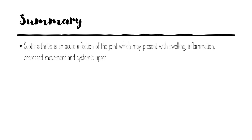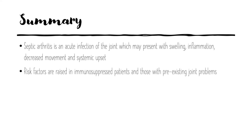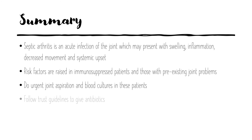Here's a summary on septic arthritis. It is an acute infection of the joint which may present with swelling, inflammation, decreased movement, and systemic upset. Patients at risk are those who are immunosuppressed or have pre-existing joint problems. You should do an urgent joint aspiration and blood cultures in these patients. Always follow the TRUST guidelines when giving antibiotics, and refer to orthopaedics for review and additional joint care. Thank you for watching.